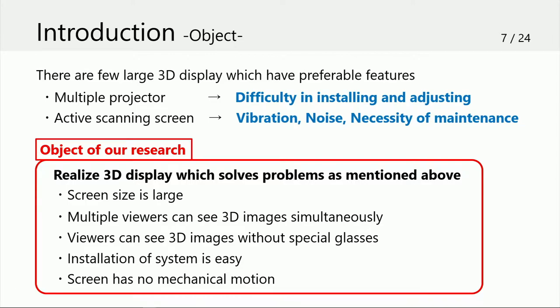To summarize previous researches, presently there are few large 3D displays which have preferable features, and they have problems such as difficulty in installing, vibration, and noise. Therefore, we aimed to realize a 3D display which solves these problems. The aimed display has five features: large screen size, multiple simultaneous viewers, no special glasses required, easy system installation, and no mechanical motion in the screen.